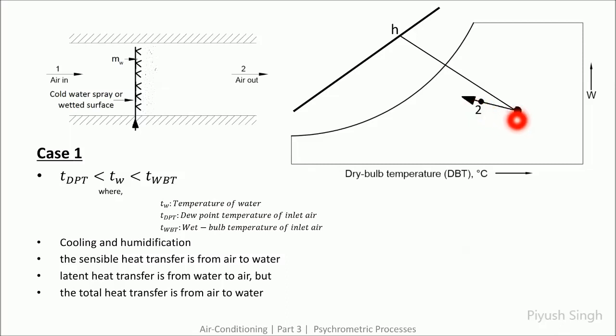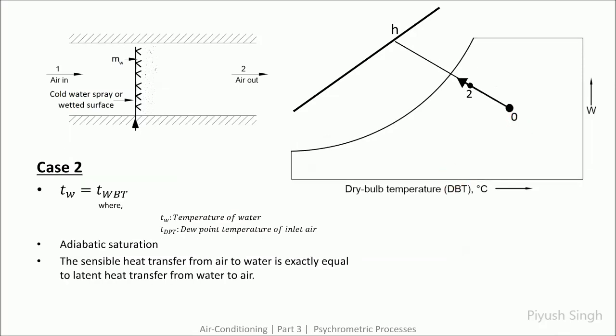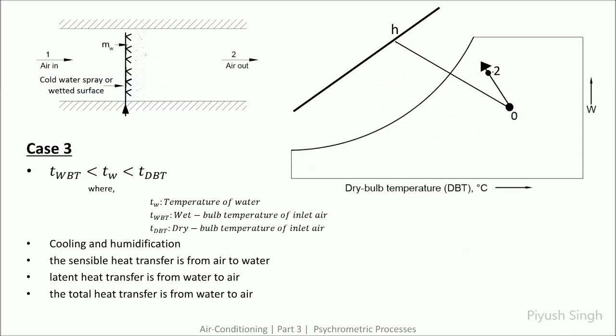The line on the psychrometric chart lies below the constant enthalpy line. The second case is when the water temperature equals the wet bulb temperature — adiabatic saturation takes place, where sensible heat transfer from air to water exactly equals the latent heat transfer from water to air, represented along the constant enthalpy line. The third case is when the water temperature lies between the wet bulb temperature and dry bulb temperature: cooling and humidification takes place, but the net heat transfer is from water to air, so enthalpy of the air increases and it lies above the constant enthalpy line.